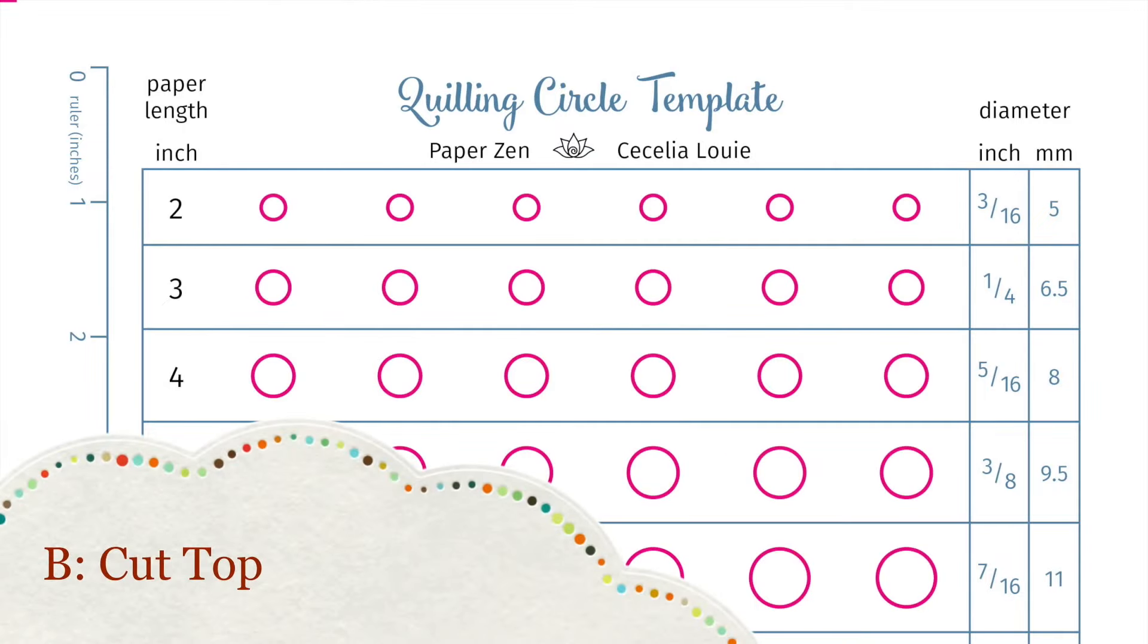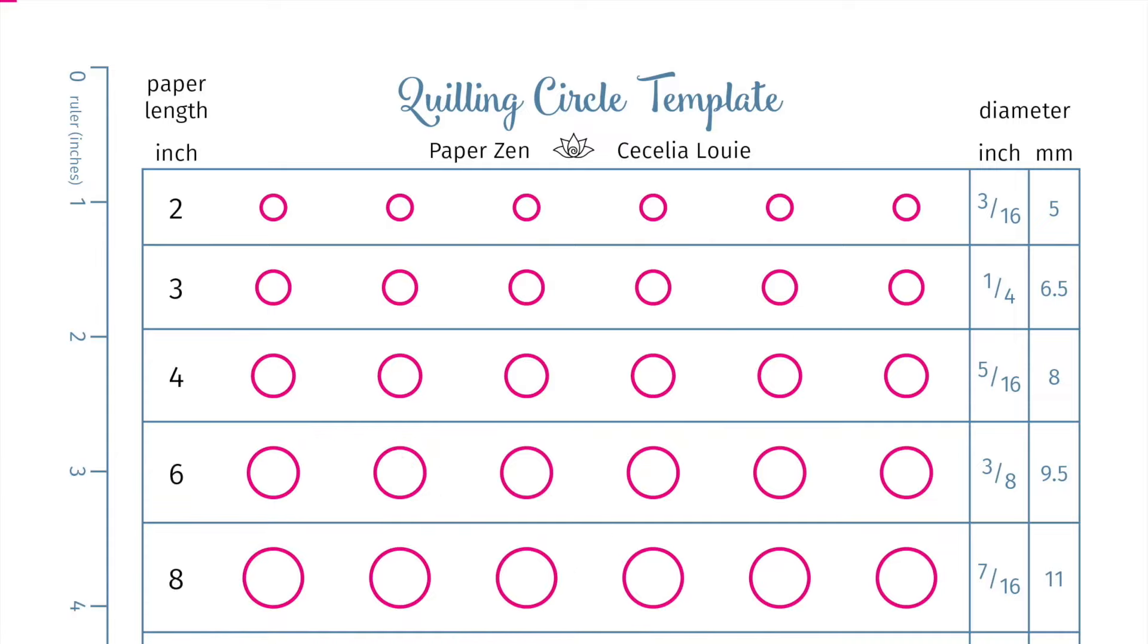For file B, this is the SVG file that you'll import into your cutting machine software to cut the circles out of your cardstock. The circles are the exact size shown in the printed template.